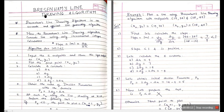What is Bresenham's Line Drawing Algorithm? Basically it's an accurate and efficient line generating algorithm. In Bresenham's Line Drawing Algorithm, we use something called incremental integer calculations. The first thing we need to find out is the slope of the line. The formula is delta y over delta x, that is modulus of y2 minus y1 divided by modulus of x2 minus x1.